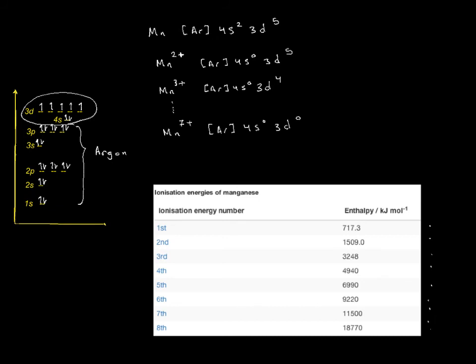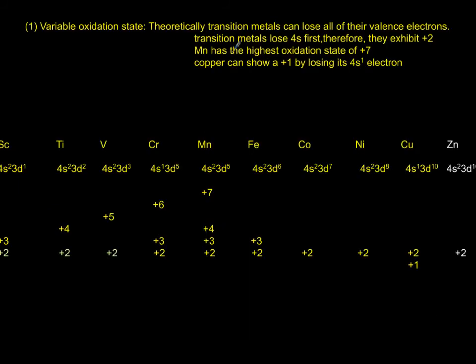So what can we say? We can say that transition metals, technically you can lose all of the valence electrons. They always show plus 2 because 4s is lost completely first. Manganese has the highest oxidation state of plus 7, and copper is also the only one that shows plus 1.